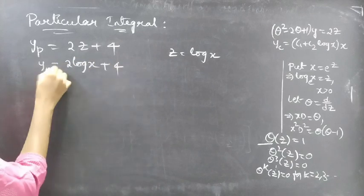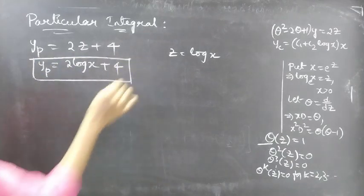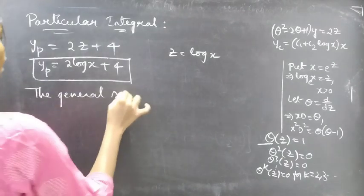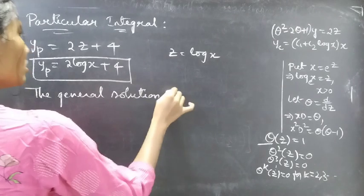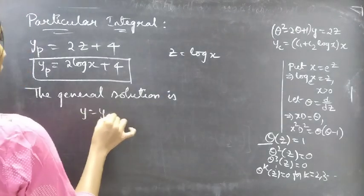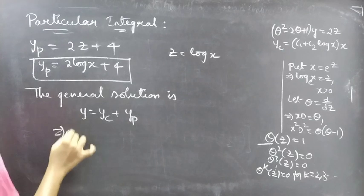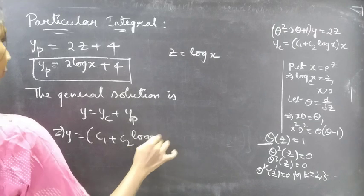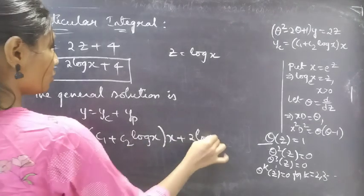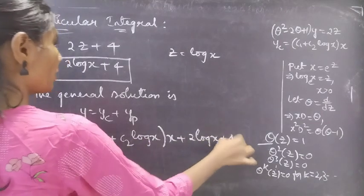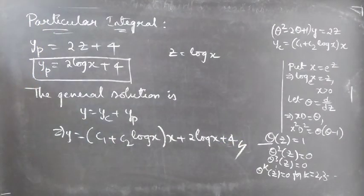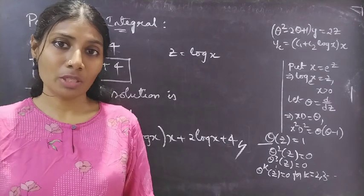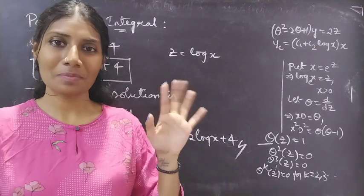We now have both yc and yp, so we can write the general solution: y equals yc plus yp, which is (c1 plus c2 log x) times x, plus 2 log x plus 4. This completes the problem. We have solved a problem from higher order linear differential equations with variable coefficients. Hope you understood — see you in the next video, bye-bye.